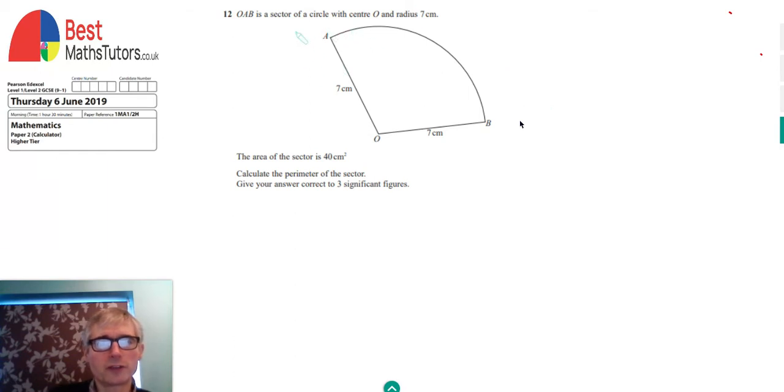What we're given is that OAB is a sector of a circle with center O and radius 7. We're given that the area of this sector is 40 centimeters squared and we're being asked to find what the perimeter of the sector is.